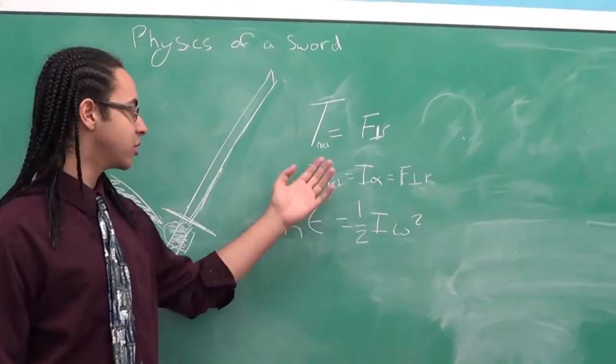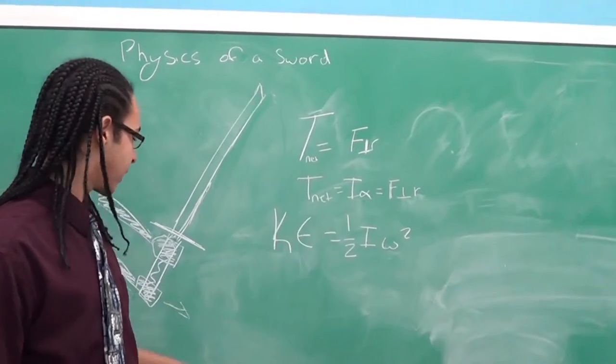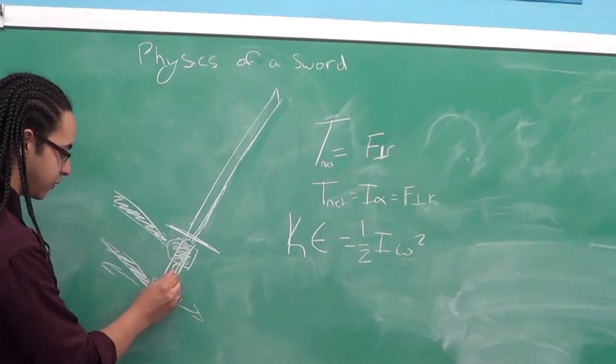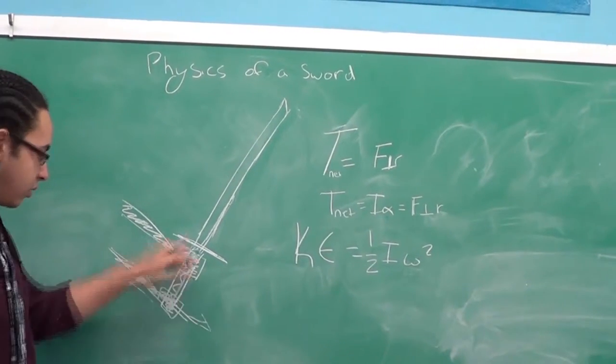So the first formula is, of course, torque net equals perpendicular force times radius. So that will be the torque applied by your back hand, and the radius will be the distance from the fulcrum. And, of course, the torque force is perpendicular to that radius.